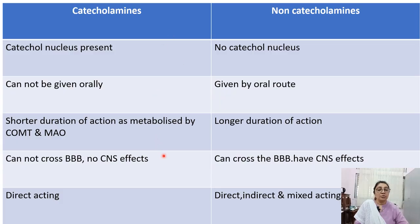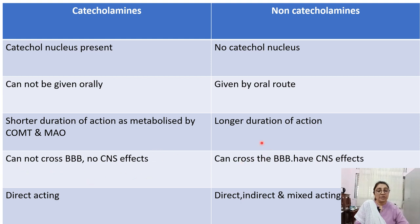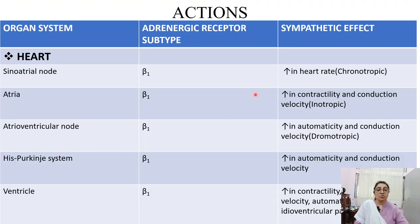Catecholamine vs. non-catecholamine group: catecholamines have a catechol nucleus and cannot be given orally because they are hydrolyzed by enzymes and rapidly inactivated by MAO and COMT. Non-catecholamines can be given orally and have a longer duration of action. Catecholamines cannot cross the blood-brain barrier, whereas non-catecholamines can. Catecholamines are directly acting; non-catecholamines are directly as well as mixed acting.